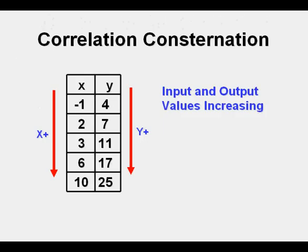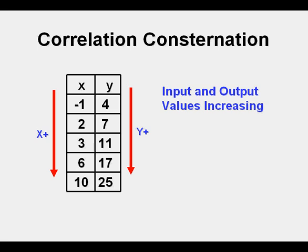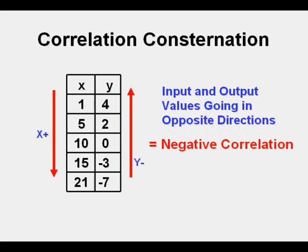If input and output values are both going up in the same direction, or both decreasing in the same direction, you have positive correlation. But when one side goes up in value and the other side goes down, or vice versa, you have negative correlation.